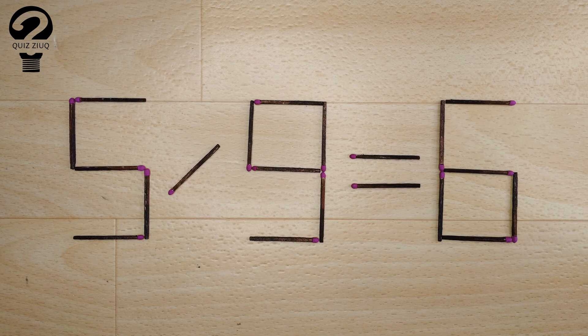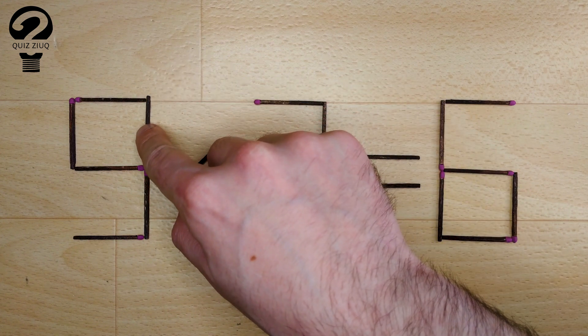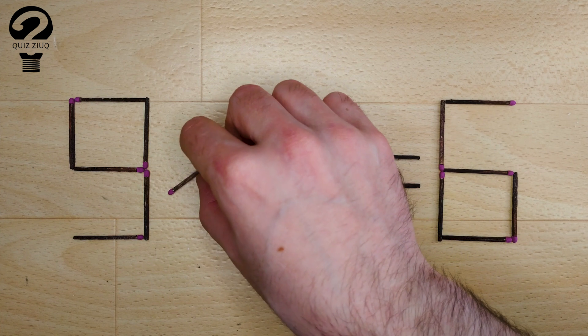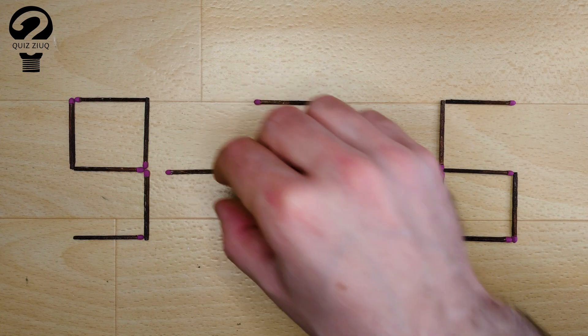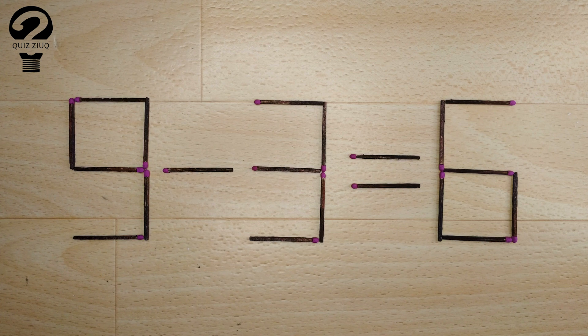How is this little puzzle solved? For this, we just need to move two matches. And now, when we check 9 minus 3 equals 6. 6 equals 6. Our equation is correct. The puzzle is solved.